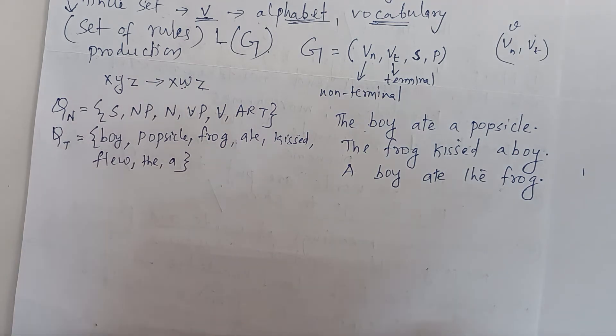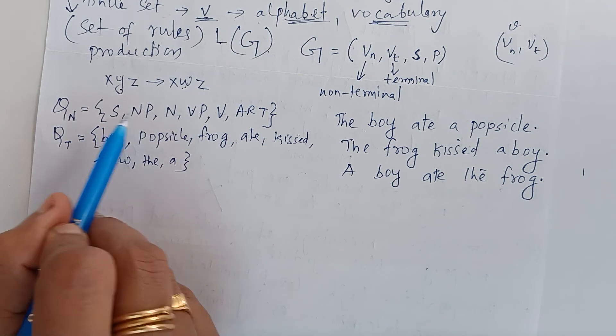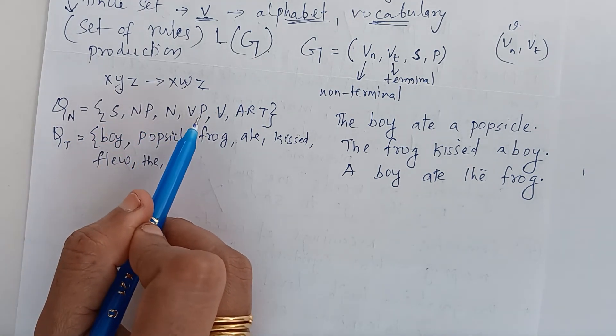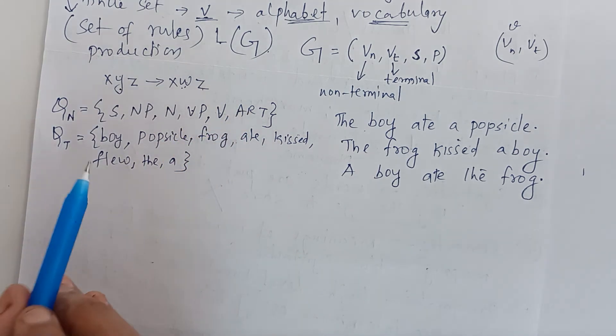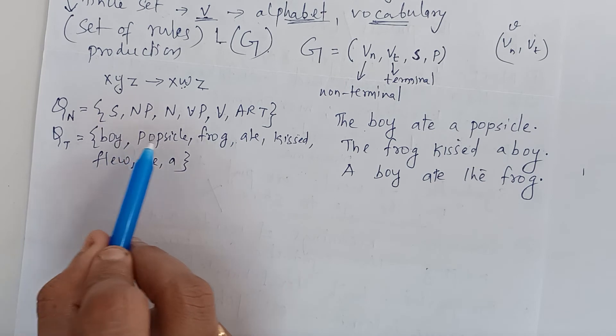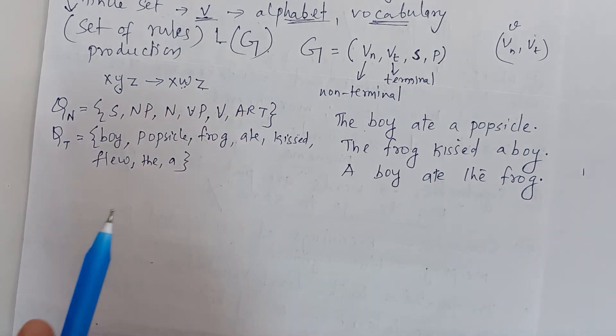There is simple grammar. We can see what are the component parts or constituents from the English with the vocabulary. V of N includes starting symbol S, noun phrase, noun, verb phrase, verb and article. V of T includes boy, popsicle, frog, ate, kissed, flew, the, A.